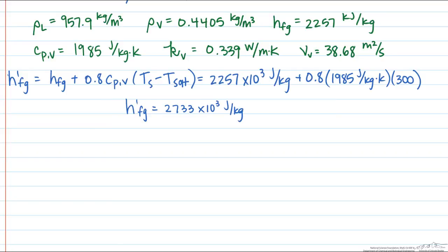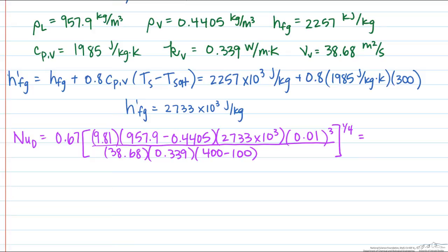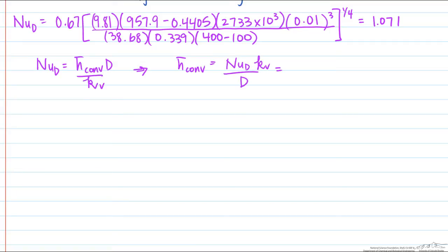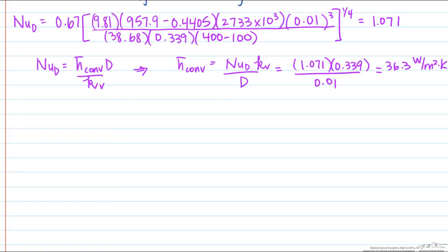When we put those values and everything else into our expression for the Nusselt number, we come out with a value of 1.071. Using that number to calculate our convective heat transfer coefficient: h_convection equals our Nusselt number times the thermal conductivity of the vapor divided by the diameter of our sphere, giving us a convective heat transfer coefficient of 36.3 watts per meter squared kelvin.